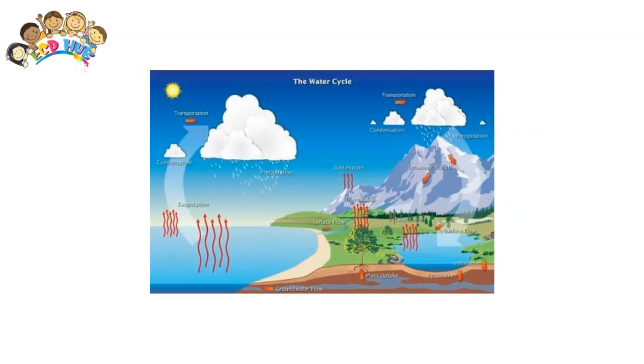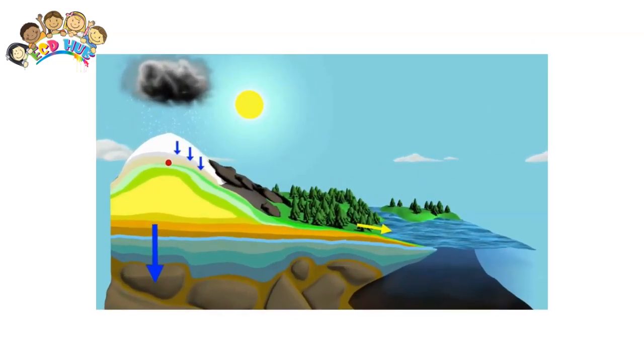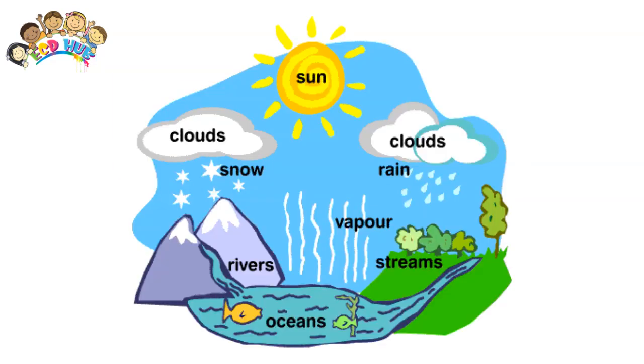The water cycle is the continuous journey water takes from the sea to the sky to the land and back to the sea. The movement of water around our planet is vital to life as it supports plants and animals.